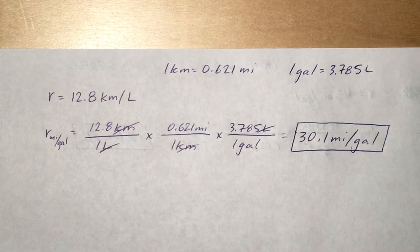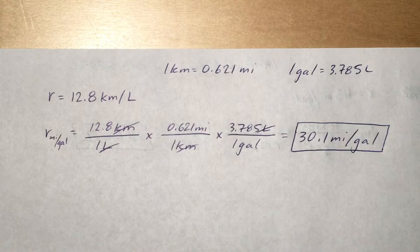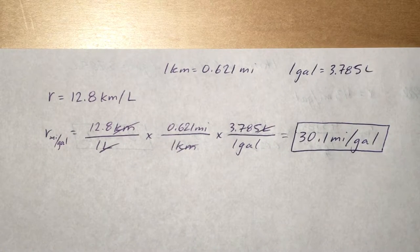You start with that initial fuel economy rating, 12.8 kilometers per liter, and you want it in miles per gallon. So first we're just going to cancel out the kilometers to get miles.